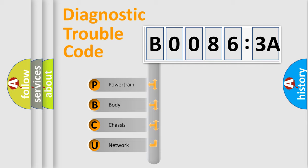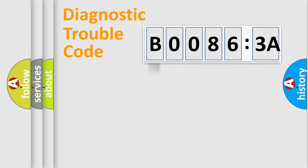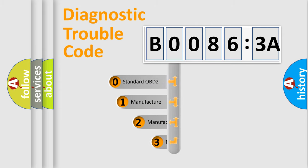We divide the electric system of automobiles into four basic units: Powertrain, body, chassis, and network. This distribution is defined in the first character code.